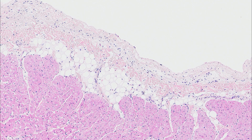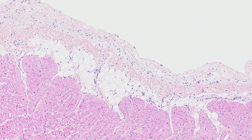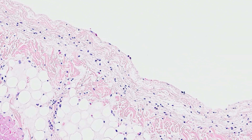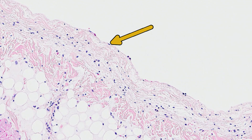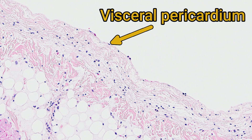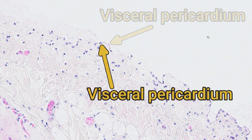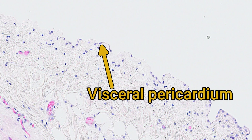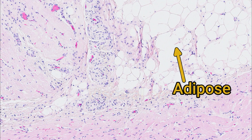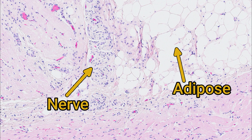When we look closer at the epicardium, you'll see a layer of squamous mesothelial cells covering fibrous tissue. This layer is known as the visceral pericardium. Deeper within the connective tissue, there's lots of adipose tissue, as well as blood vessels of varying sizes, lymphatics and nerves.